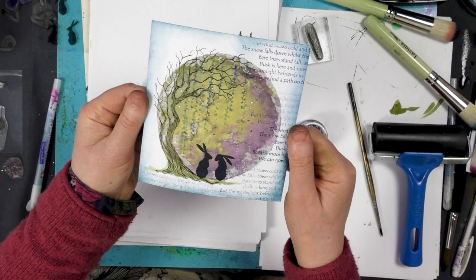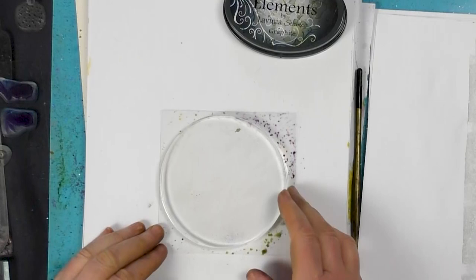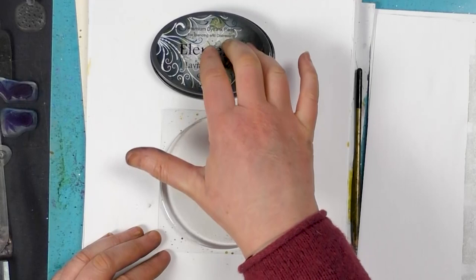Hi there, this is Tracy from Lavinie Stamps. We're going to be using the 4-inch round gel press. We're going to use our elements as a base and then we're going to sprinkle some Brusho.